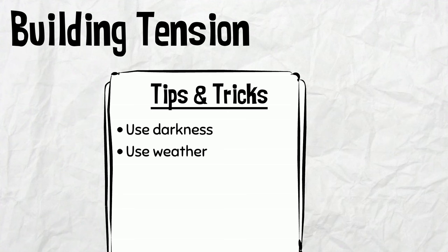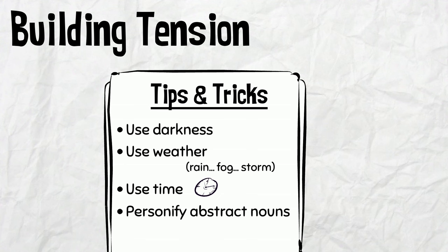Use weather — sometimes different weather, such as rain, fog or a storm, can help build tension. Use time — can making your character race against the clock make your writing more suspenseful? Personify abstract nouns — when we give human qualities to abstract nouns, such as coldness, fear, loneliness or hope, we give them more power than they would otherwise have.